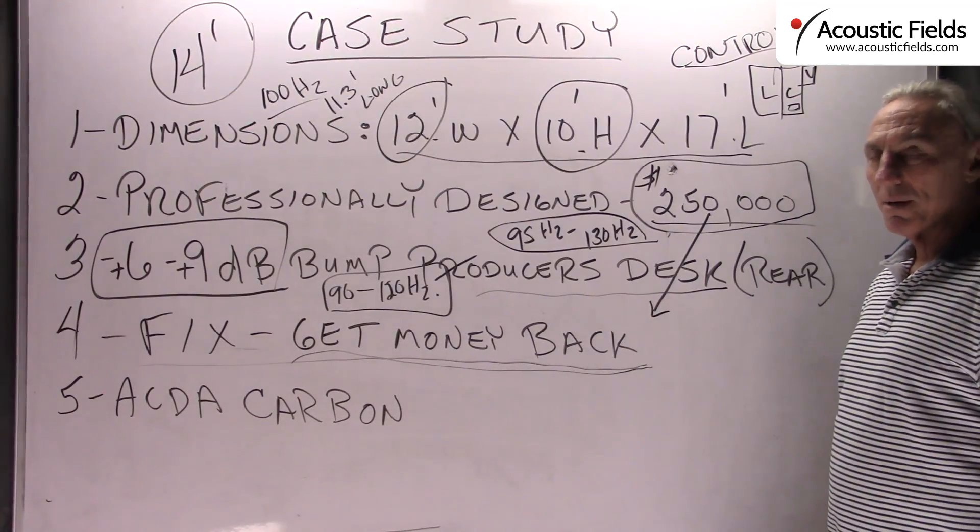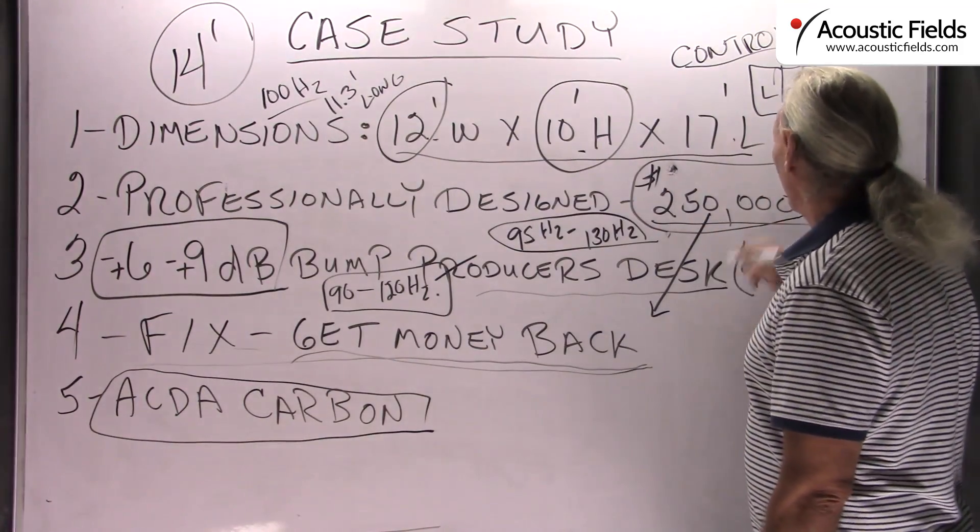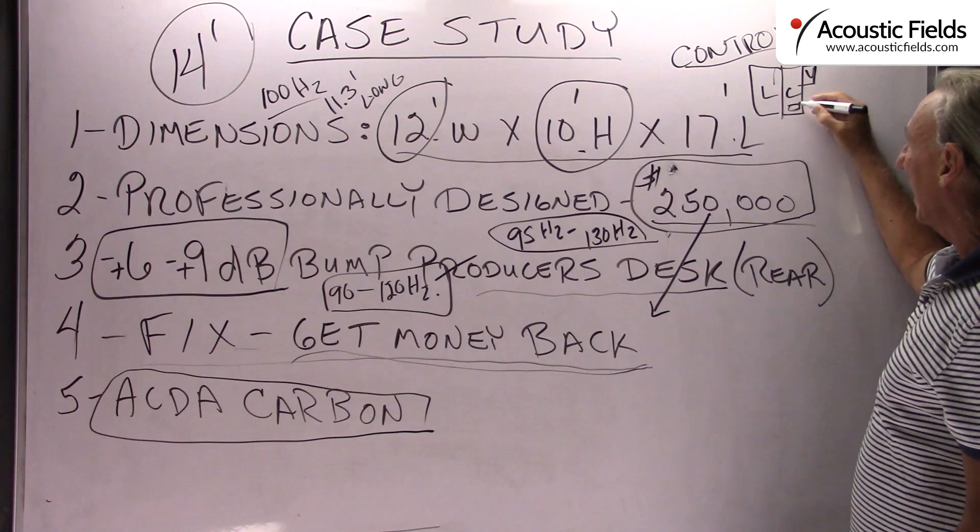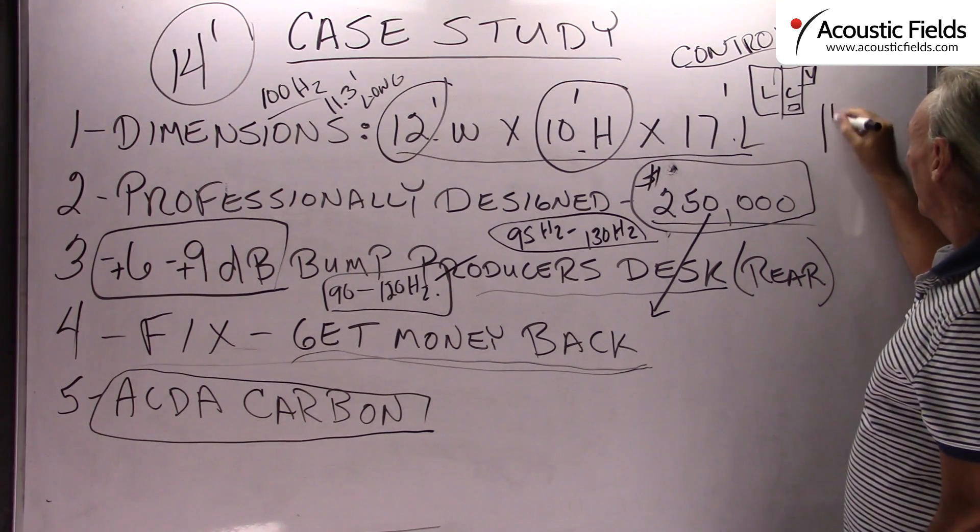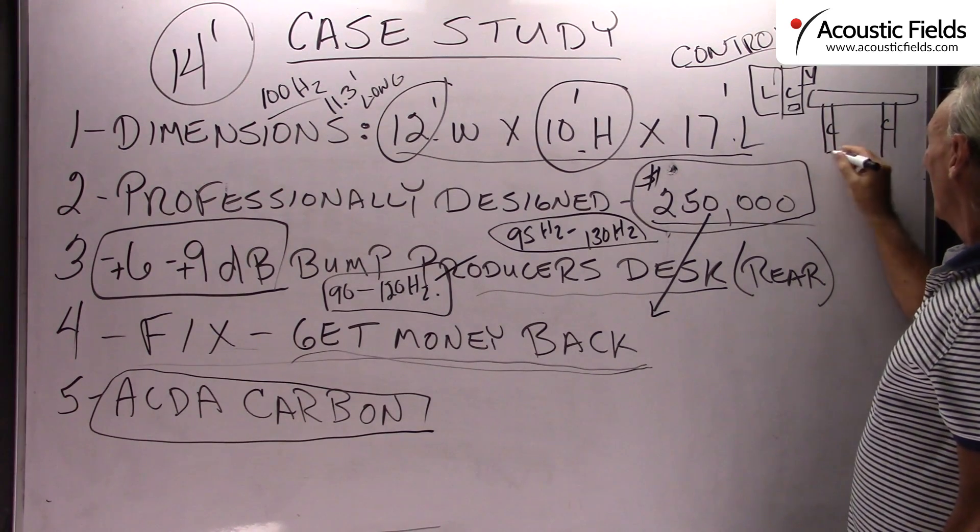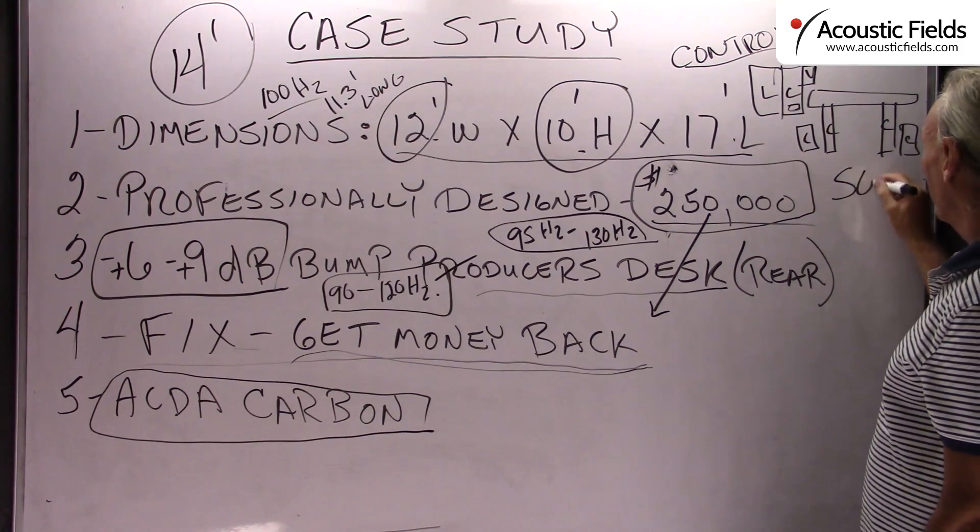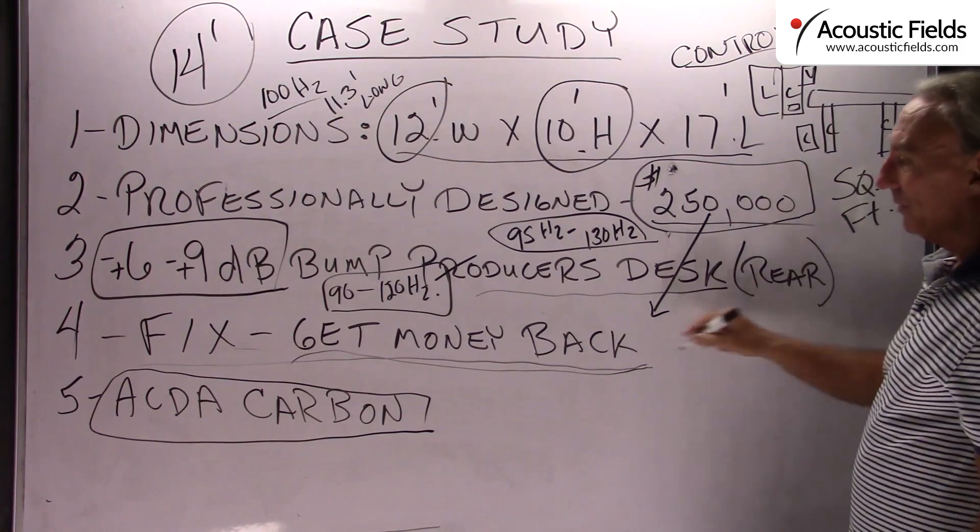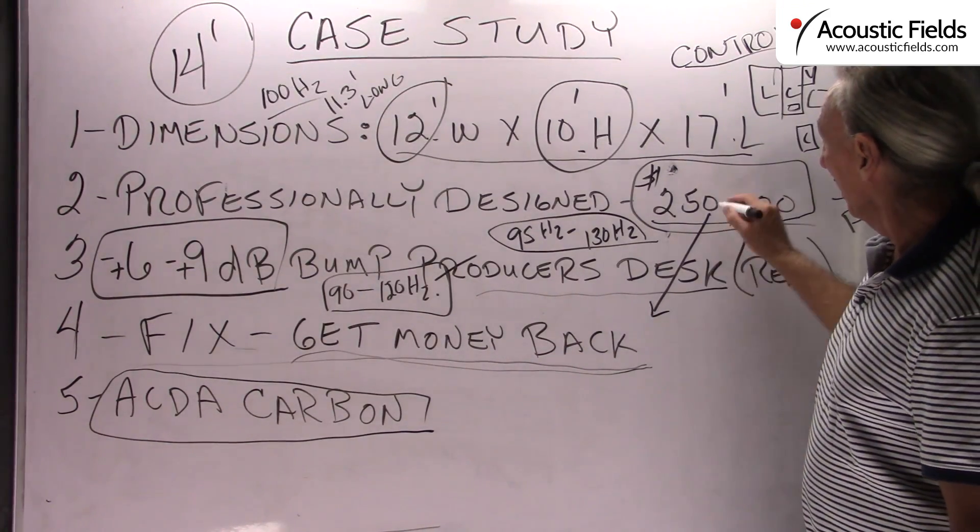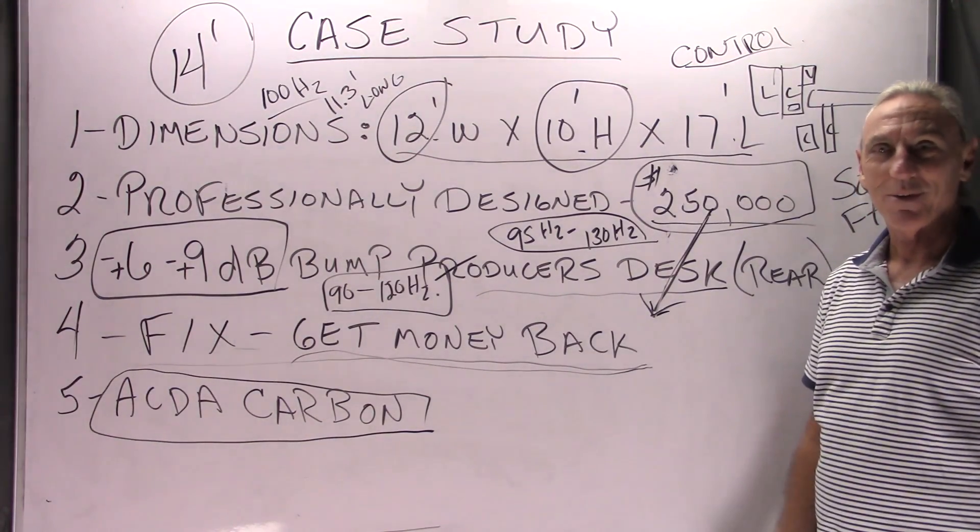So since getting the client's money back was not an option, we're going to spec in our carbon. Now his room is tight as you can imagine with these dimensions and he's even got a producer's desk here in the back. So we're going to have to fashion some kind of maybe legs for the desk to set on that are going to be carbon. Maybe we're going to have some smaller freestanding carbon units around. It's all about square footage matching the treatment to the problem. And that takes space and square footage. So we'll get it figured out for him and it'll be a lot less than $250,000 hopefully. Thank you.